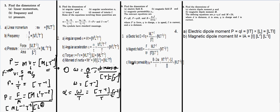Torque is force times displacement. Force has dimension MLT⁻², and displacement has dimension L, so overall the dimension of torque is ML²T⁻².